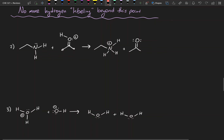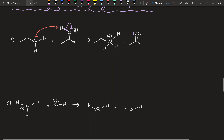We can figure out that this lone pair on nitrogen is going to reach out and grab that hydrogen, and the bond composing the oxygen-hydrogen bond is going to break and go onto that oxygen to form the second lone pair. If you remember the formal charge equation, nitrogen normally has five valence electrons and will get a plus charge when it takes on that extra hydrogen, because now it has four bonds and no lone pairs, giving it a formal charge of plus one.